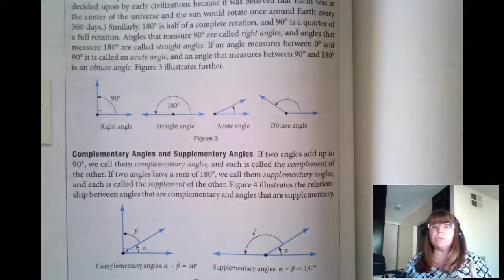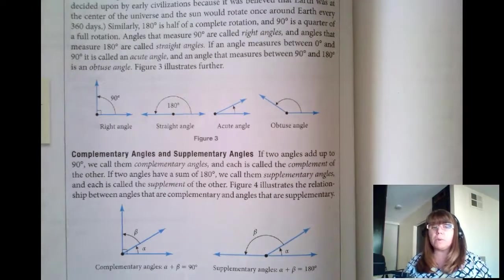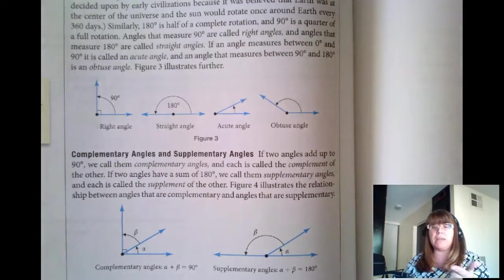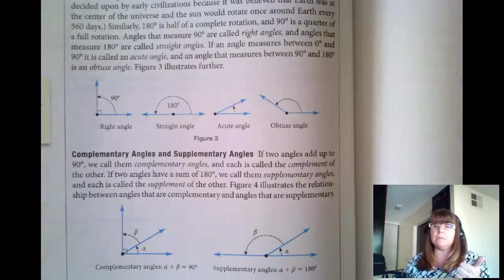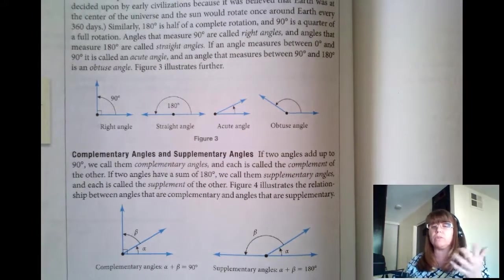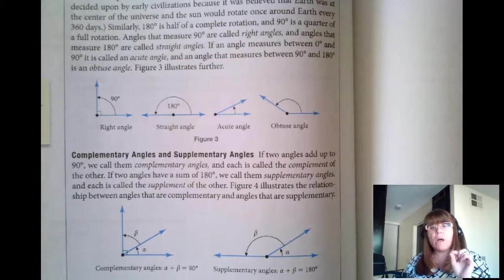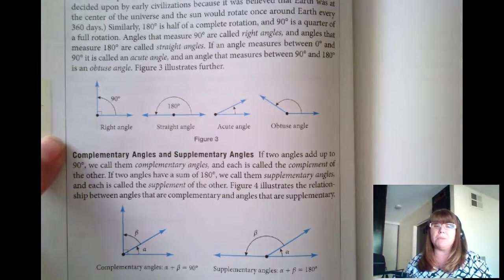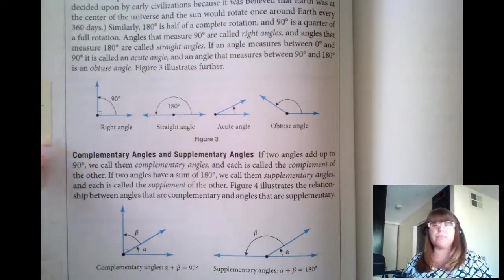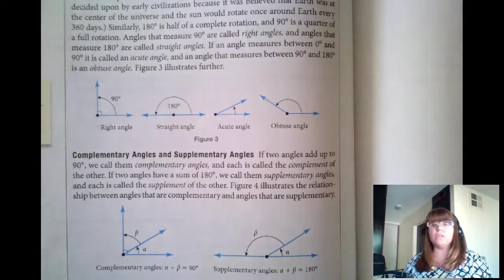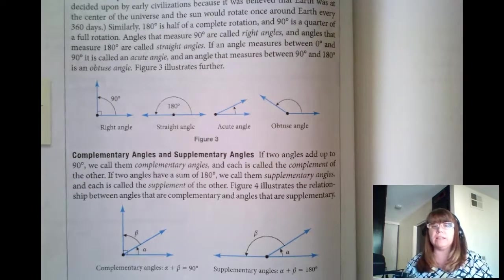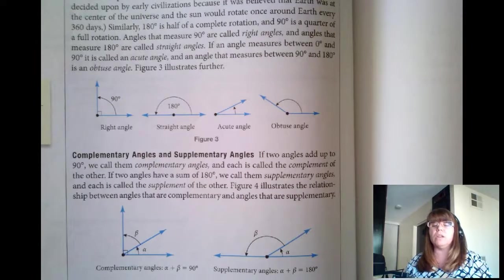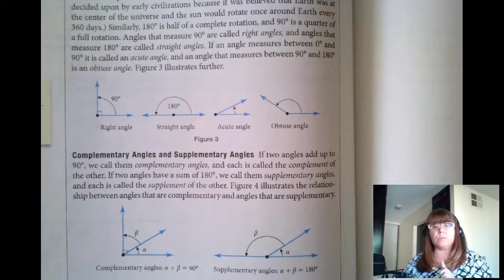Now sometimes it's hard to remember which goes with which. So I do remember that C comes before S in the alphabet. And of course 90 comes before 180 when you start counting. That's how I try and memorize what word goes with what angles. As to remember what 90 degrees is, it's quarter of a circle, divide 360 by 4, you get 90. A line is half a circle, half way across the circle. 360 divided by 2 is 180.